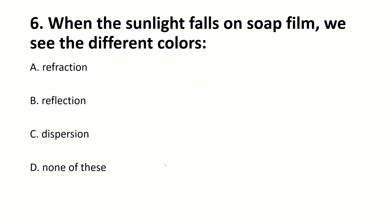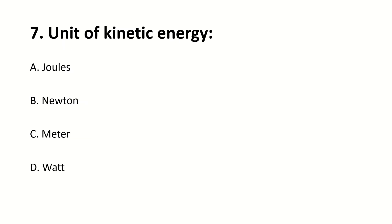When the sunlight falls on soap film, we see different colors. Right answer is interference. Unit of kinetic energy is joule or Newton into meter.